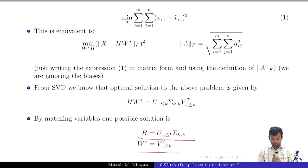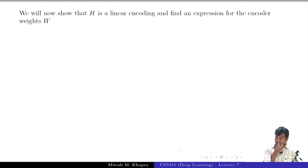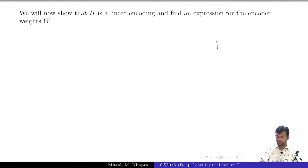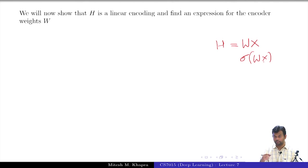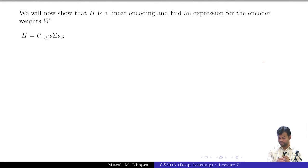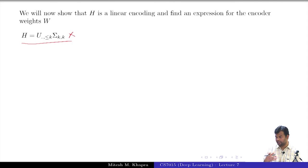Now we will try to show that H is actually a linear encoding. What does this mean? I am going to show that H is a linear encoding of x — that H is of the form Wx, and not something involving a sigmoid or any other nonlinearity. When I say H is a linear encoding I mean that H is obtained by a linear transformation of x. H as we defined is equal to U-Sigma. If I already had an x here I would be done, but I need to get to a form where H equals W times x. So I will do some simple algebraic manipulation.